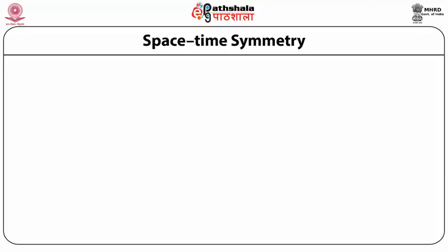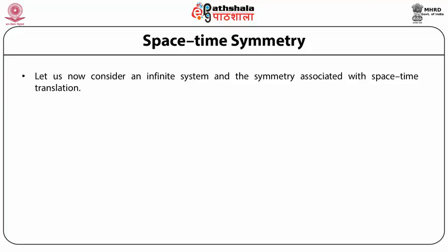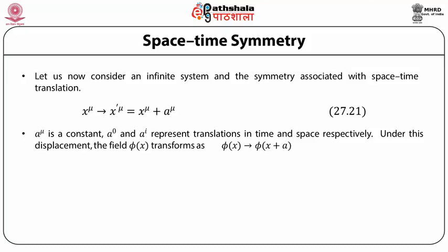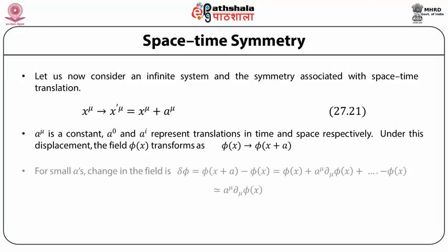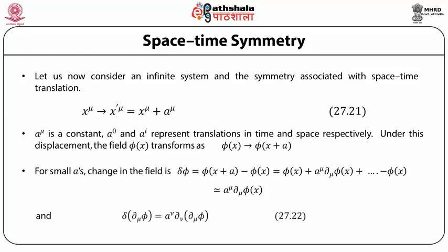We next discuss space-time symmetry. Let us consider an infinite system and the symmetry associated with space-time translation: x_μ → x'_μ = x_μ + a_μ. Here a_μ is a constant, and a₀ and a_i represent translations in time and space respectively. Under this displacement, the field φ(x) transforms as φ(x) → φ(x + a). For small a's, the change in the field is δφ = φ(x+a) − φ(x) ≈ a^μ ∂_μ φ(x), and δ(∂_μ φ) = a^μ ∂_μ(∂_μ φ).